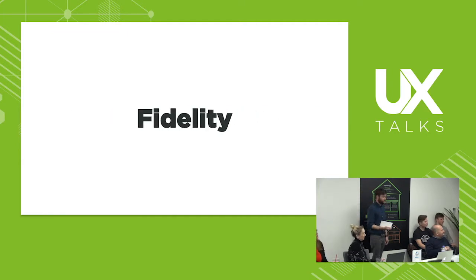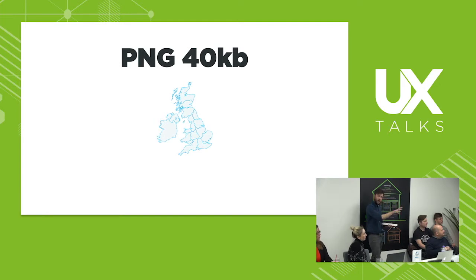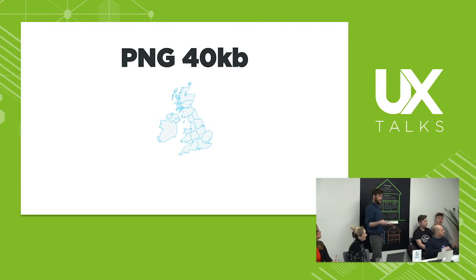Fidelity. This PNG looks okay — map of the UK, it's 40K, which is pretty big. But we've had to keep it at 40K so that it looks sharp in the browser. With the development of retina-type displays, we could have that image be twice the size so the retina display, which has double pixel density, is able to still see a sharp image.